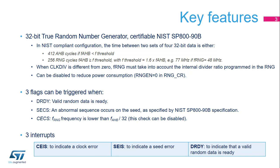The data ready flag is set in the status register when a set of new random data is ready and validated. It must always be used. The RNG automatically performs NIST SP890B compliant health tests on the noise source. A seed error current status flag is set in case of an error. A clock error current status flag is set if the RNG clock is less than HCLK clock divided by 32. This check can be disabled, especially when the RNG clock is initialized low for maximum entropy. An interrupt source can also be enabled to indicate an abnormal seed sequence or frequency error.